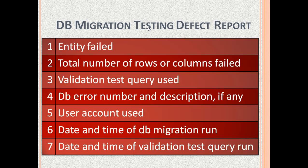Now let us see the data that we should include in every database migration testing defect report. The entity that failed. Total number of rows or columns that failed. The validation test query that we used. Database error number and description, if any. The user account that we used to log in to the source and target databases. The date and time of the database migration run, and the date and time of our validation test query run.